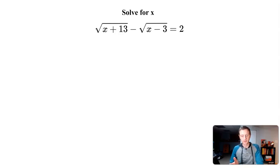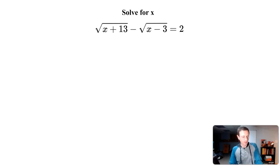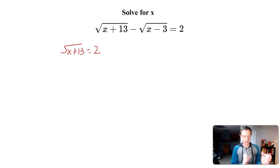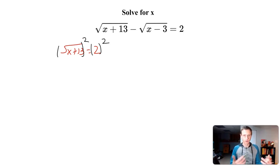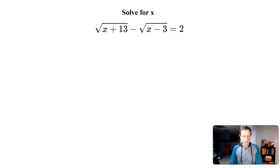We have a really cool problem here today. This problem at first would intimidate a lot of people — you see the radical: square root of x plus 13 minus square root of x minus 3, equal to 2. That's kind of scary because you might be trained to see a single radical, where you just square it and go through your process. But here we can't exactly do that because we have two radicals.